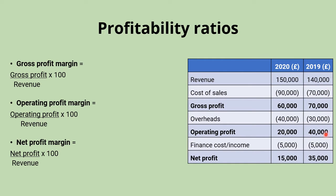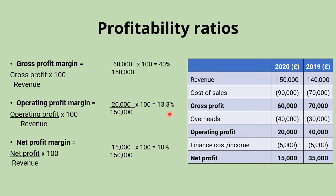In this example income statement, for gross profit margin we take 60,000 ÷ 150,000 × 100, giving us 40%. For operating profit margin: 20,000 ÷ 150,000 × 100 = 13.3%. And for net profit margin: 15,000 ÷ 150,000 × 100 = 10%. Those are our profit margins for 2020. We could equally calculate the profit margins for 2019 and compare the two, or make clearer comparisons between businesses of different sizes to see how effective they are at turning revenue into profit.